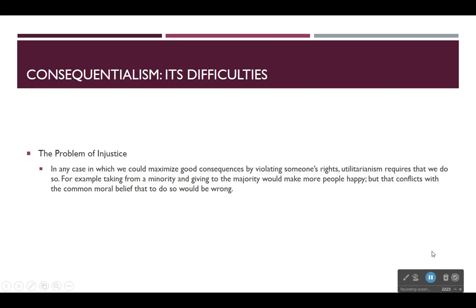Another problem for consequentialism that Schaefer Landau presents is what he calls the problem of injustice. In any case in which we could maximize good consequences by violating someone's rights, utilitarianism requires that we do so. For example, taking from a minority and giving to the majority would make more people happy, but that conflicts with the common moral belief that to do so would be wrong.